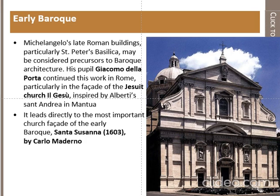Michelangelo's St. Peter Basilica may be considered a precursor to Baroque architecture, as it used curved shapes and a cornice to encircle the building in the form of a ribbon. His pupil Porta continued his work in Rome, particularly in the facade of the Jesuit Church, the Gesu. This church was inspired by Alberti's Sant'Andrea in Mantua, where Alberti used the triumphal arch facade — an inspiration Porta applied to the Gesu.